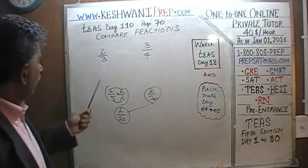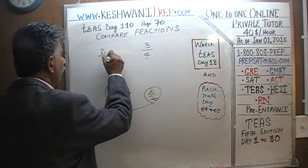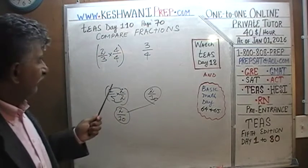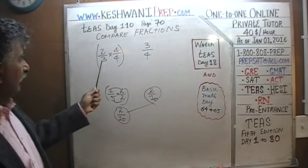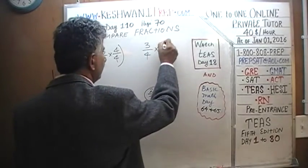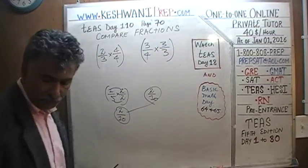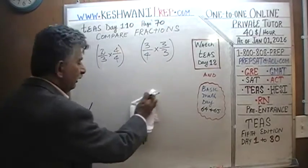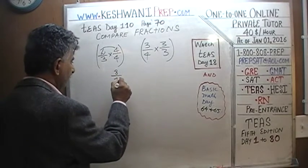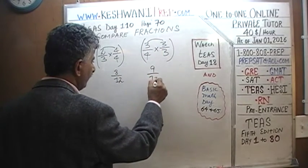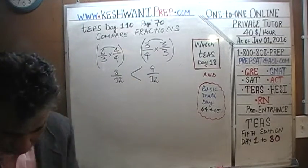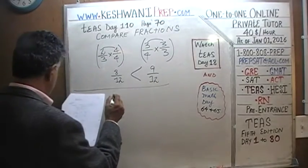Now back to two-thirds versus three-quarters. We multiply the first fraction by four over four and the second fraction by three over three, because the least common multiple of three and four is twelve. Now we have eight-twelfths versus nine-twelfths, and of course nine-twelfths is bigger than eight-twelfths. So three-quarters is bigger than two-thirds.